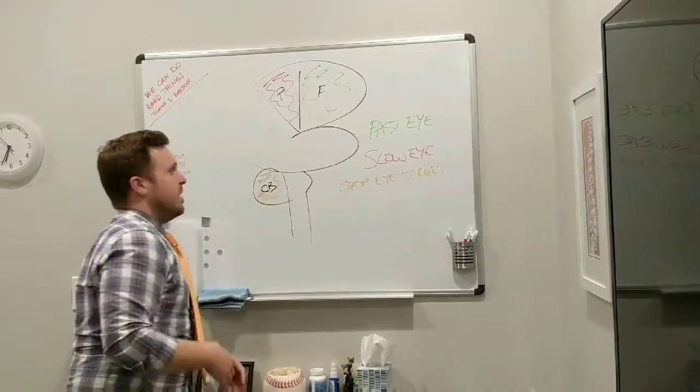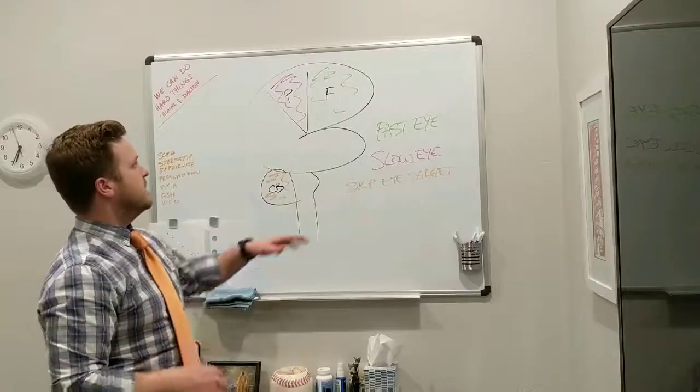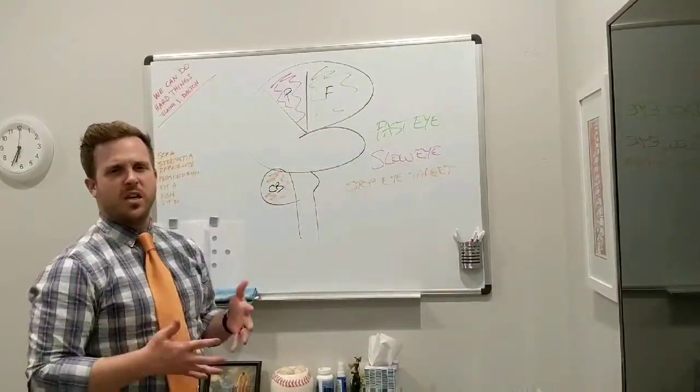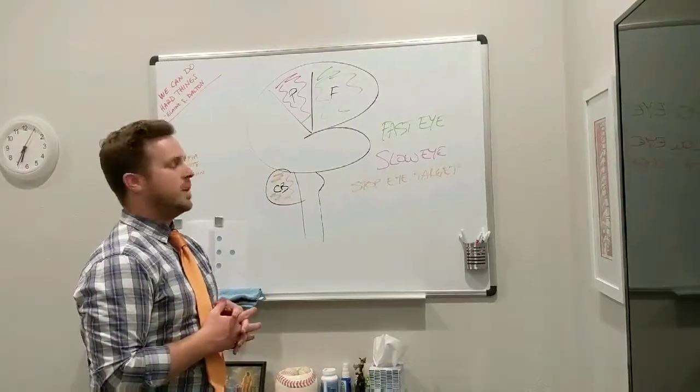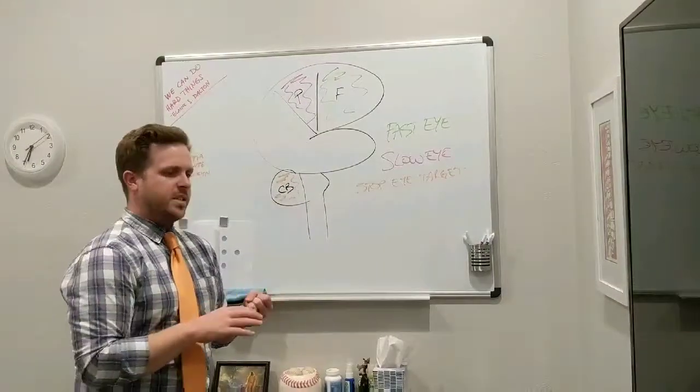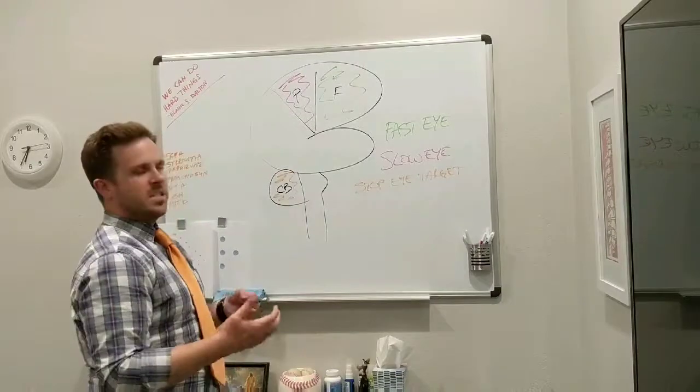So the way that we do this is we run through a couple tests here in the office, checking fast eye movements, seeing how that frontal lobe is working. If we see those eye movements have difficulties starting or moving in that direction quickly, then we know a frontal lobe might be a little bit off. And they might also have complaints of poor decision making, lack of motivation, and things of that sort.